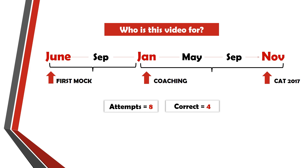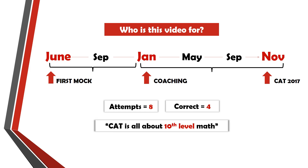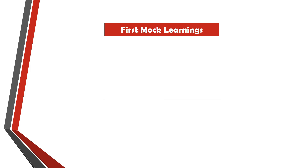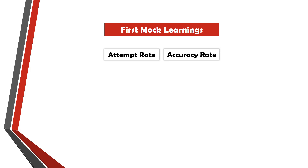People might tell you that CAT is all about 10th level mathematics and nothing more. But the truth is that even if you have studied mathematics till 10th, you still need to brush up your concepts, and how quickly you are able to do that will determine the amount of effort you need in this section. The first mock I took taught me an important lesson: to score better, I'll need to improve my attempt rate as well as accuracy rate. A lot of people emphasize accuracy rate but forget to tell you about the attempt rate.